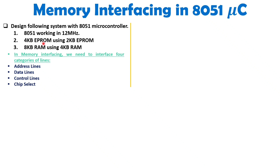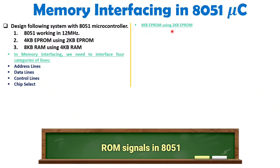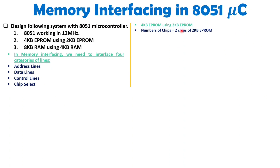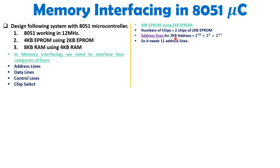To have 4KB of EPROM, you need 2 chips of 2KB EPROM. For address lines of a 2KB chip: 2K = 2¹ × 2¹⁰ = 2¹¹, so there are 11 address lines (A0 to A10). Since it is KB — byte — there are 8 data lines.